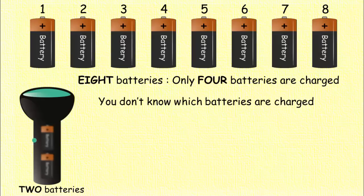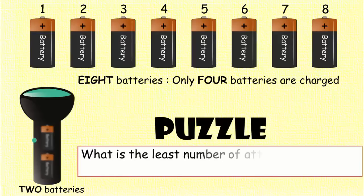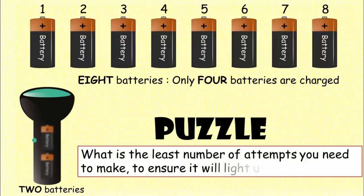However, you can try different combinations of batteries to light up the torch. What is the least number of attempts you need to make to ensure that it will light up the torch?